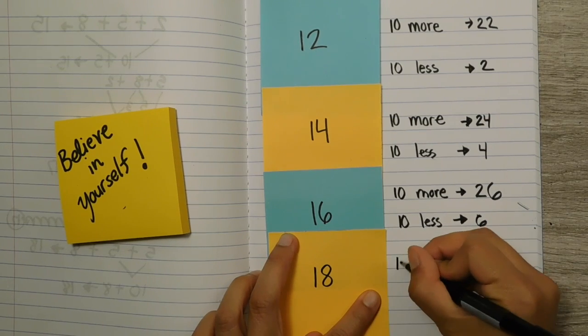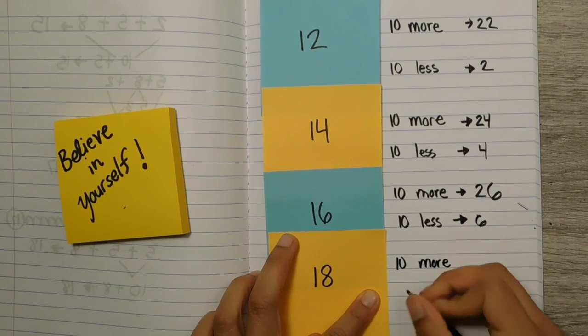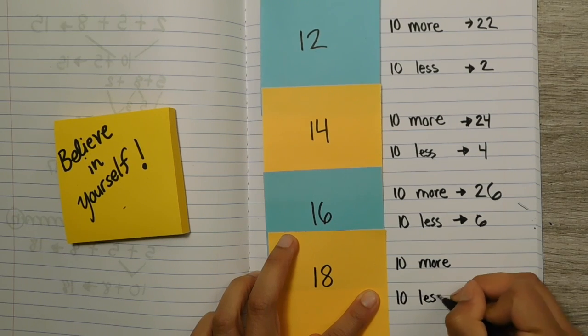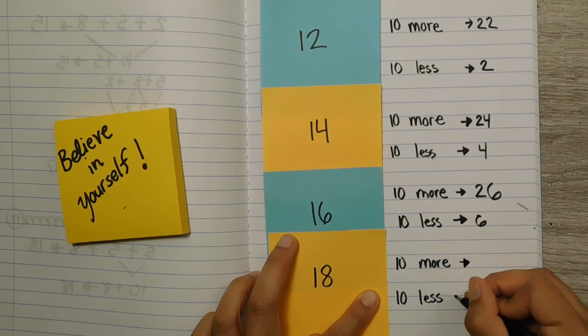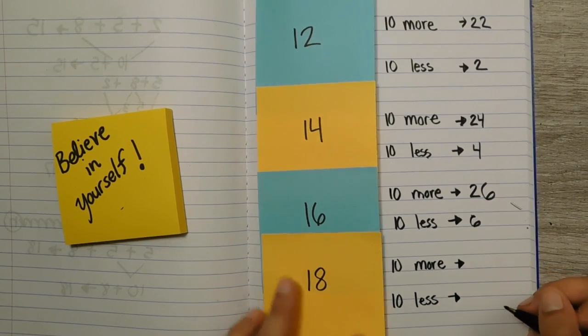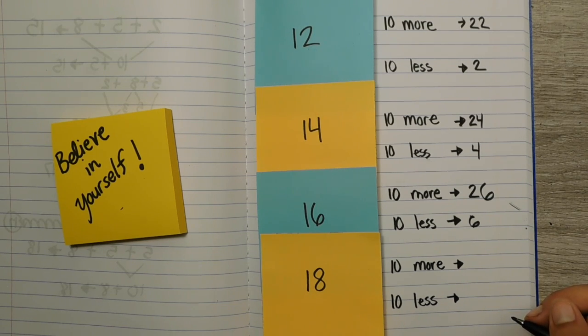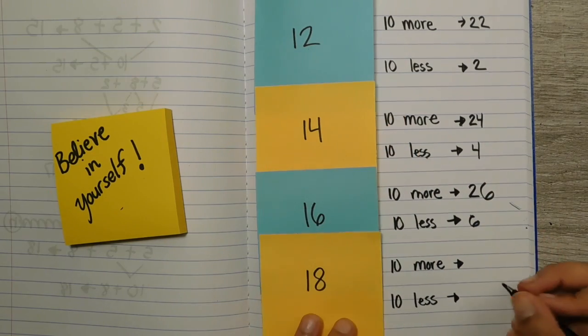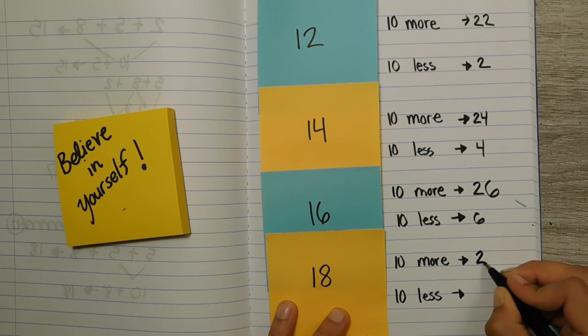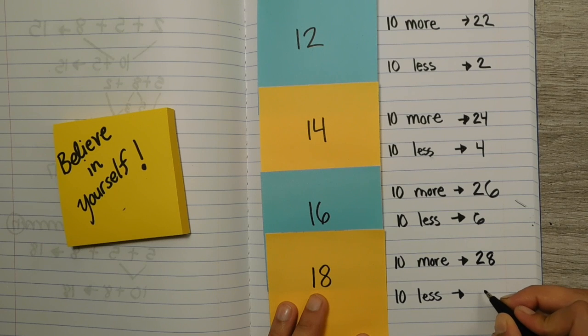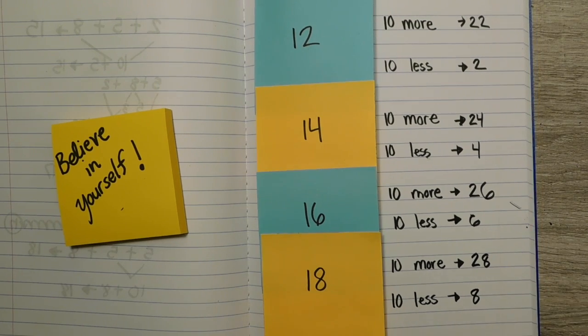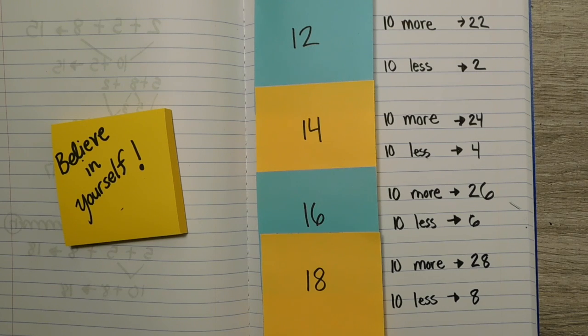18. Ready? So again, think, what is 10 more? And then what is 10 less. Turn and talk to someone next to you. Are you ready? Come together in three, two, one. So 18 and 10 more would lead to 28, and 18 and 10 less would lead to what? Eight.